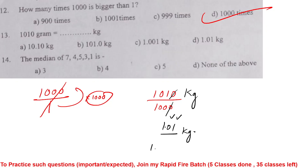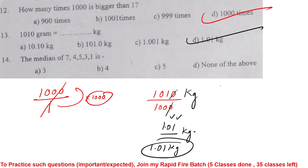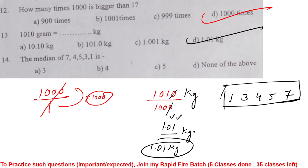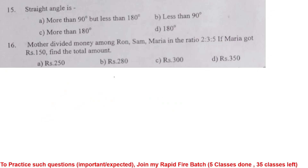The median of 7, 4, 5, 3, 1: arrange in ascending order — 1, 3, 4, 5, 7. Total numbers are 5, so the middle value is the 3rd, which is 4. That is the median.